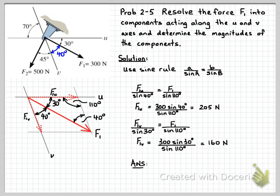So now let's summarize our answers. Our final answers are: the component of F1 in the u direction is 205 newtons, and the component of F1 in the v direction is 160 newtons.